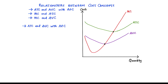As we can see on the graph on the right, we have the marginal cost curve, the average total cost curve, and the average variable cost curve, but we don't have the average fixed cost curve. Usually in most cost diagrams we don't draw the average fixed cost. That is because we know that the average fixed cost equals the average total cost minus the average variable cost at each level of output.